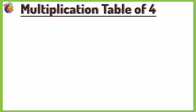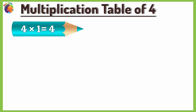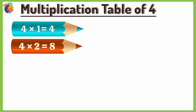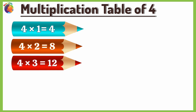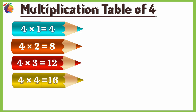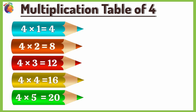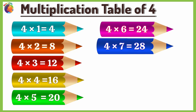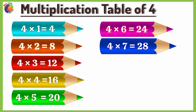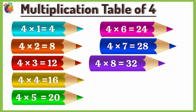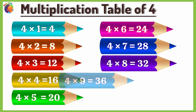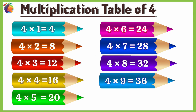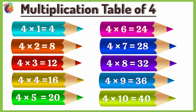Multiplication Table of 4. 4 times 1 is 4, 4 times 2 is 8, 4 times 3 is 12, 4 times 4 is 16, 4 times 5 is 20, 4 times 6 is 24, 4 times 7 is 28, 4 times 8 is 32, 4 times 9 is 36, 4 times 10 is 40.